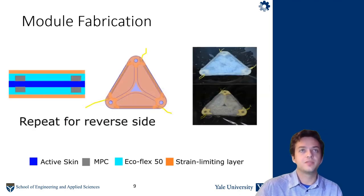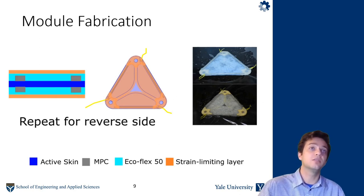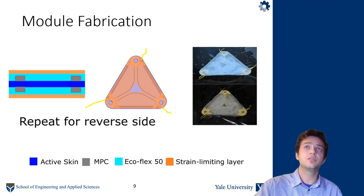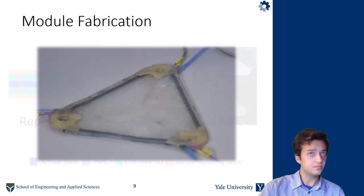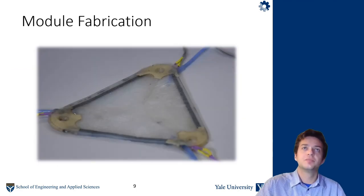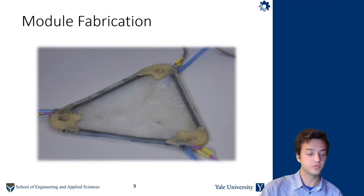Then the last step for fabrication is you actually repeat everything for the reverse side of the skin. So again, you will apply a paper mask, you'll coat MPC, add wire leads, encapsulate in Ecoflex 50, and that encapsulant will double as an adhesive for the strain limiting layer, put it under a weight cure. And at the end you have this robotic skin with tightly integrated sensing. You can see the wire leads for the sensors, as well as the pneumatic tubes for the pneumatic actuators.